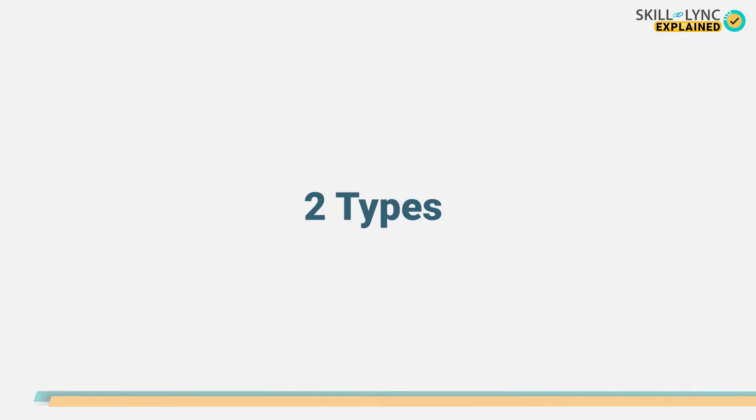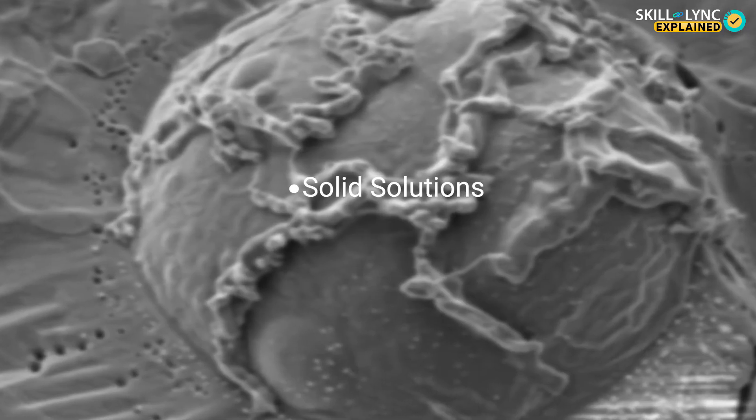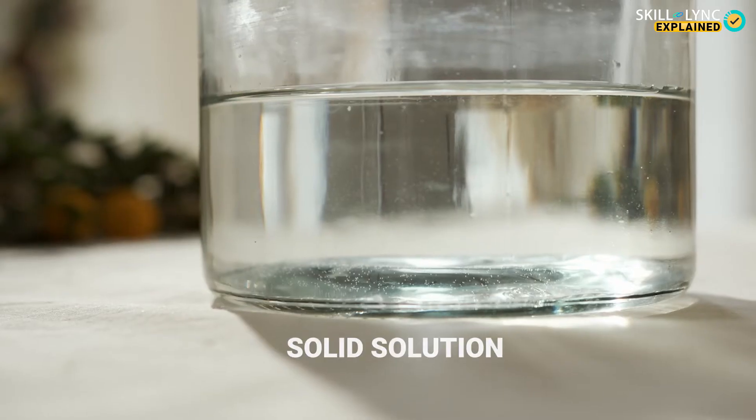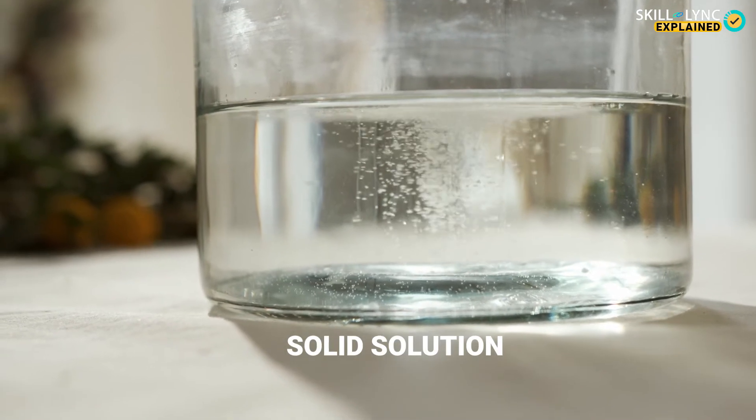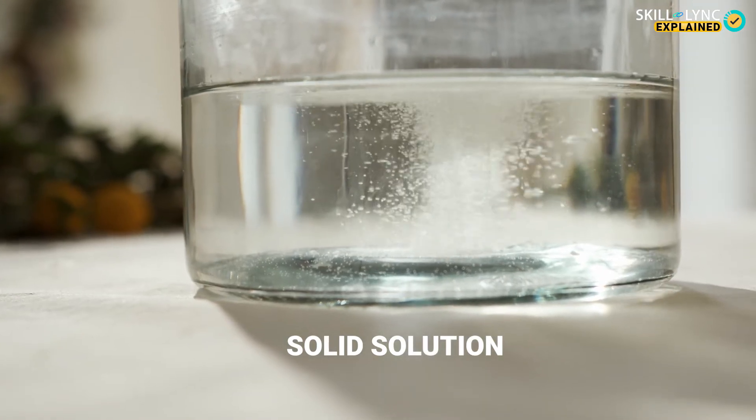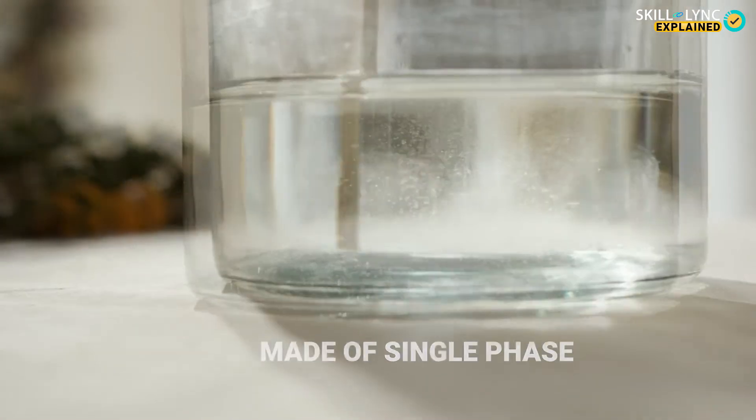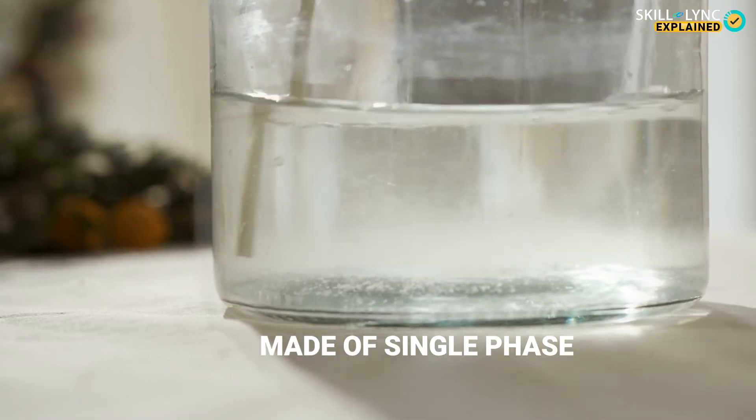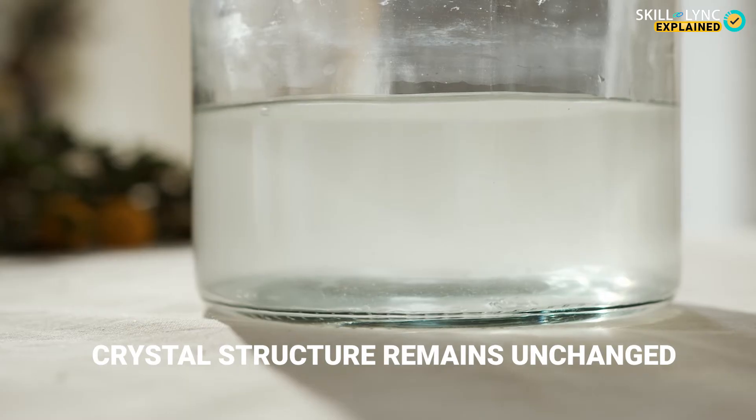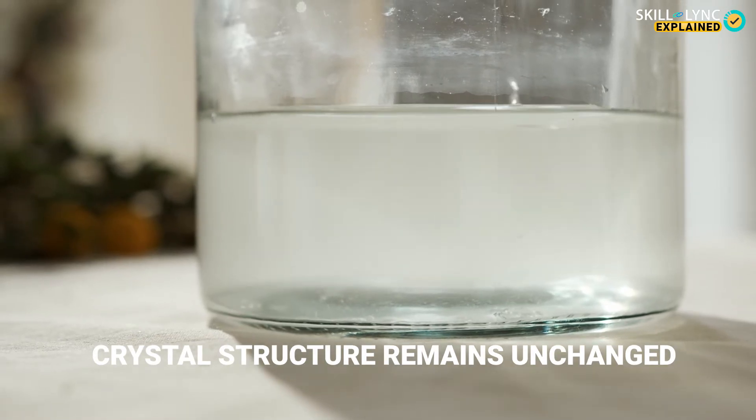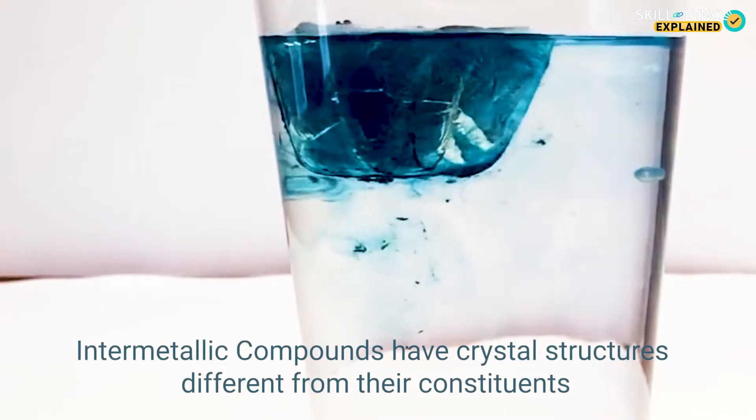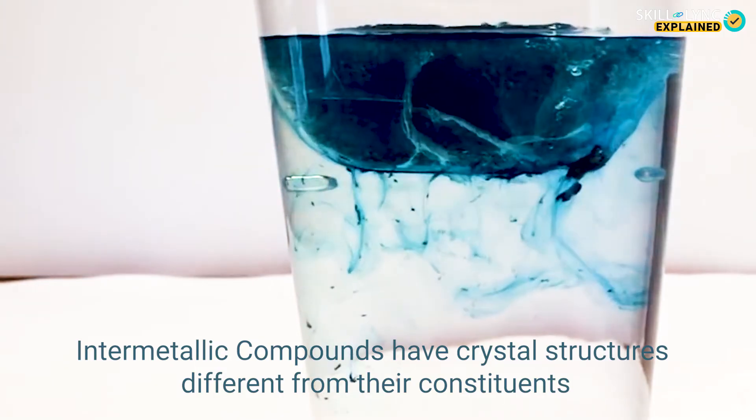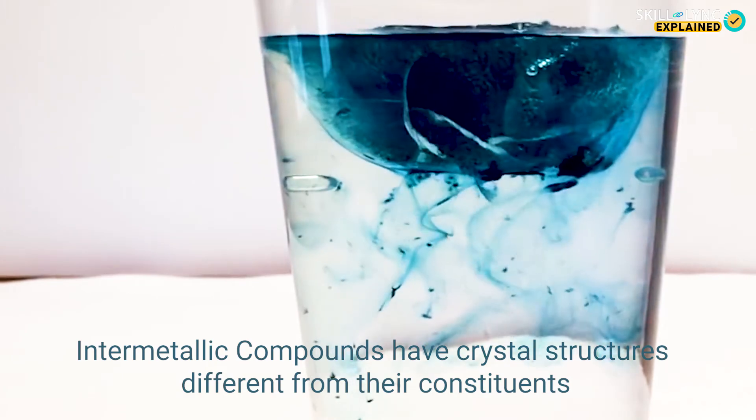Alloys can be divided into two types: solid solutions and intermetallic compounds. A solid solution is a solid-state mixture that contains two or more solutes in a solvent. A solid solution consists of a single phase throughout, and the crystal structure of the solvent remains unchanged even after adding the solute. Whereas when the crystal structure of the alloy is different from its constituents, it is said to be an intermetallic compound.